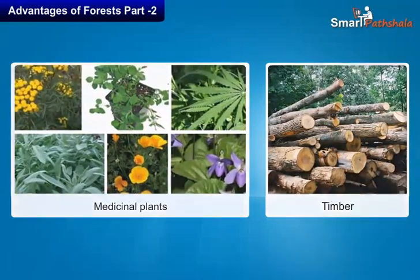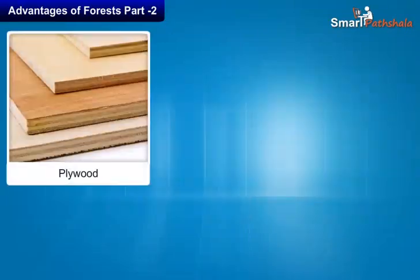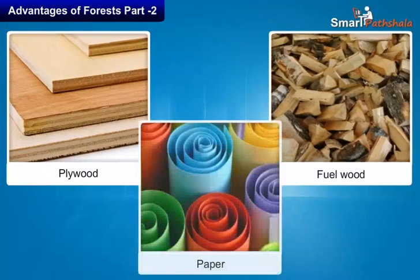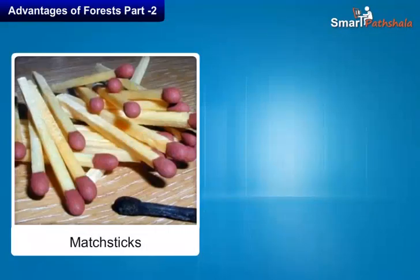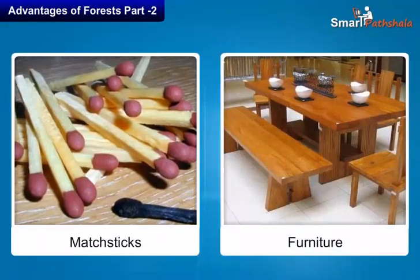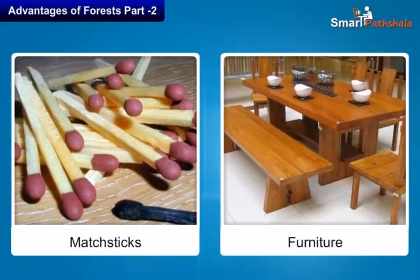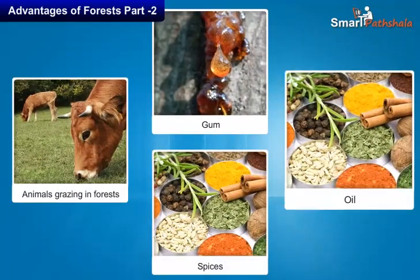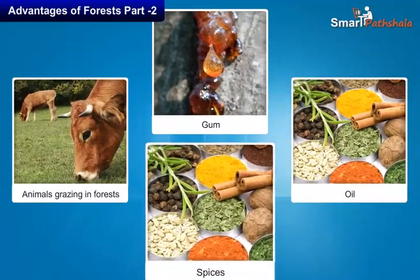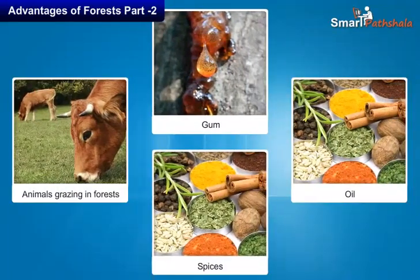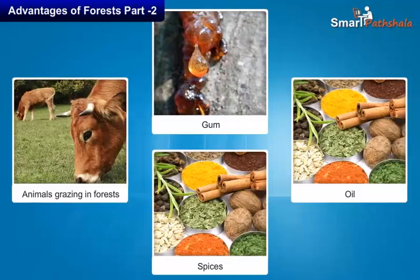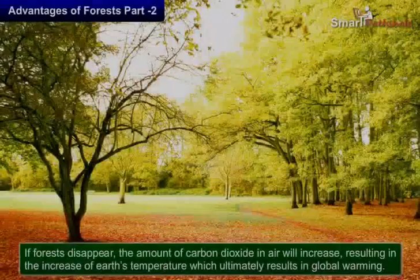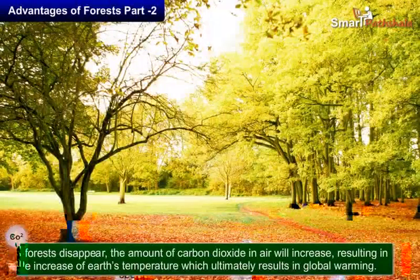We also get many products like plywood, fuel wood, paper, matchsticks and furniture from forests. We also get gum, oils, spices, and fodder for animals from forests.